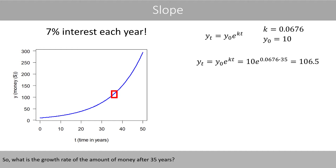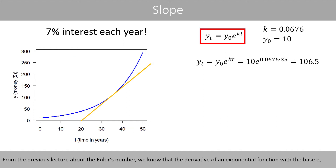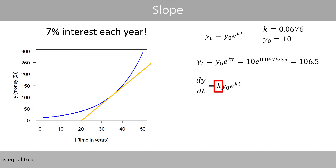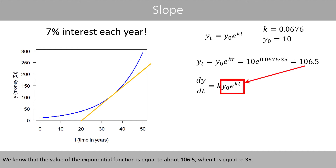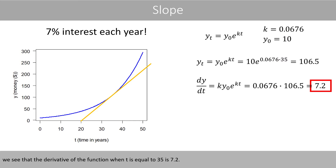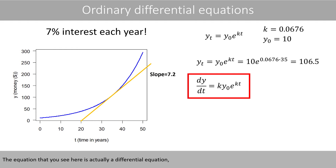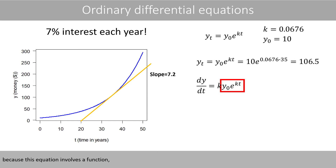So, what is the growth rate of the amount of money after 35 years? That would be the same thing as asking what the slope of the tangent line is that just touches the curve when t is equal to 35. From the previous lecture about Euler's number, we know that the derivative of an exponential function with base e is equal to k times the function itself. We know that the value of the exponential function is about 106.5 when t equals 35. Plugging in the numbers, we see that the derivative of the function when t equals 35 is 7.2, meaning the slope of the tangent line is 7.2. The equation we see here is actually a differential equation, because it involves a function and the derivative of that function.